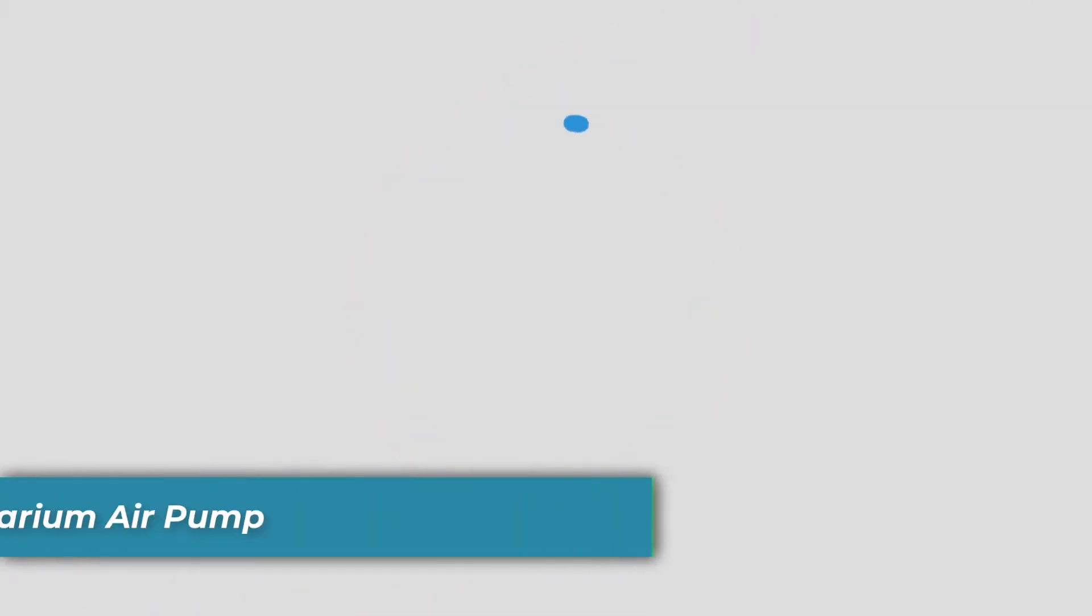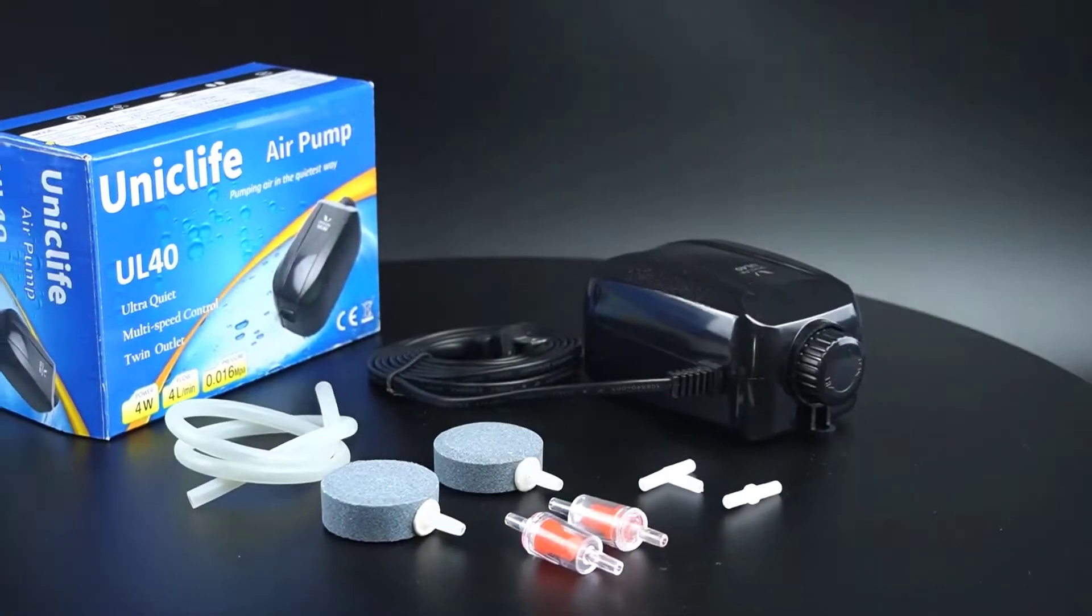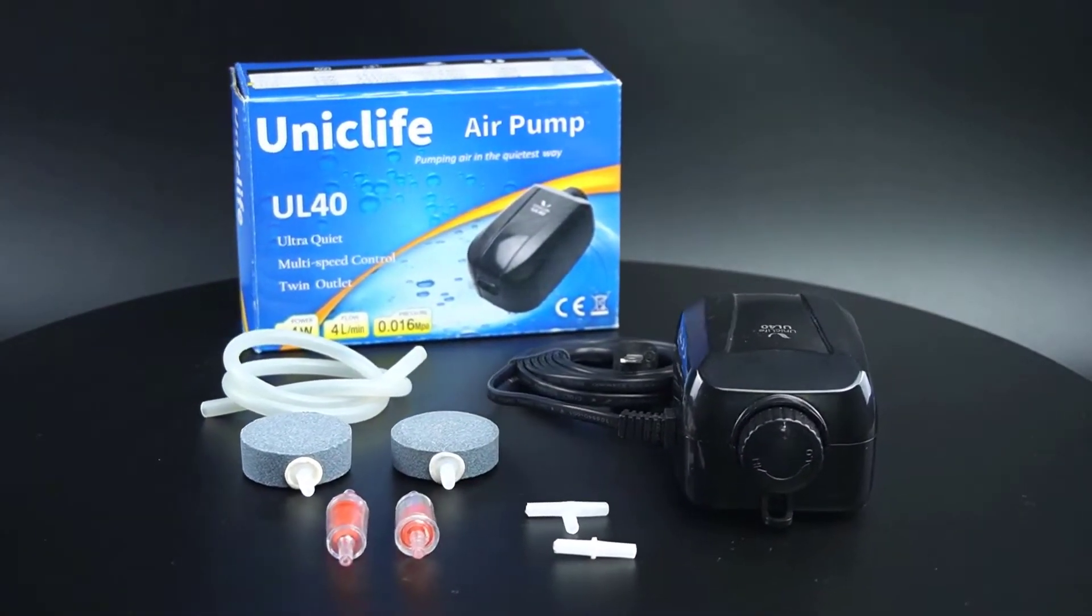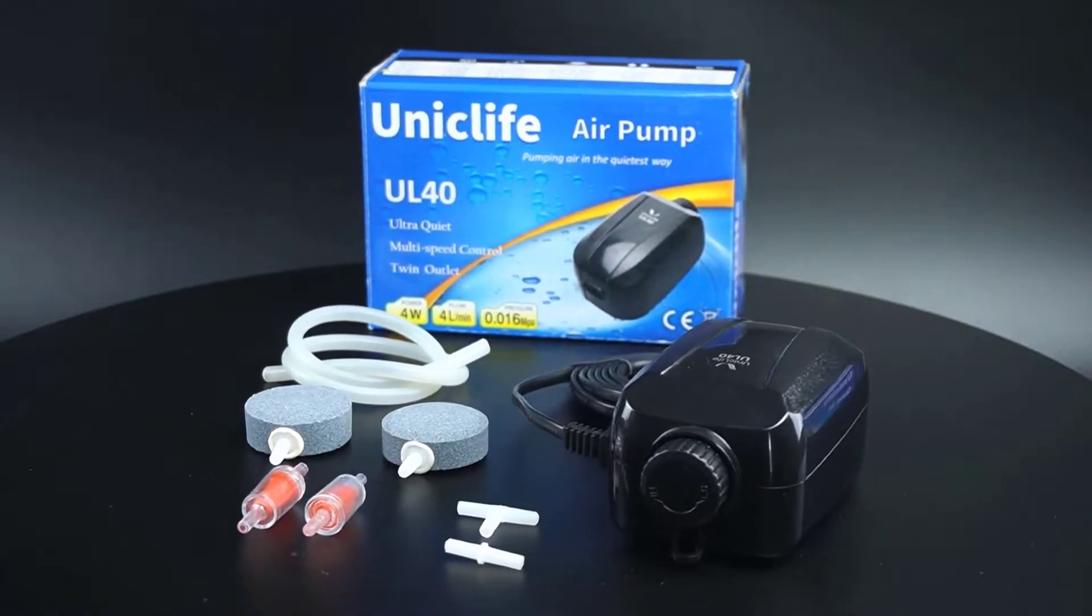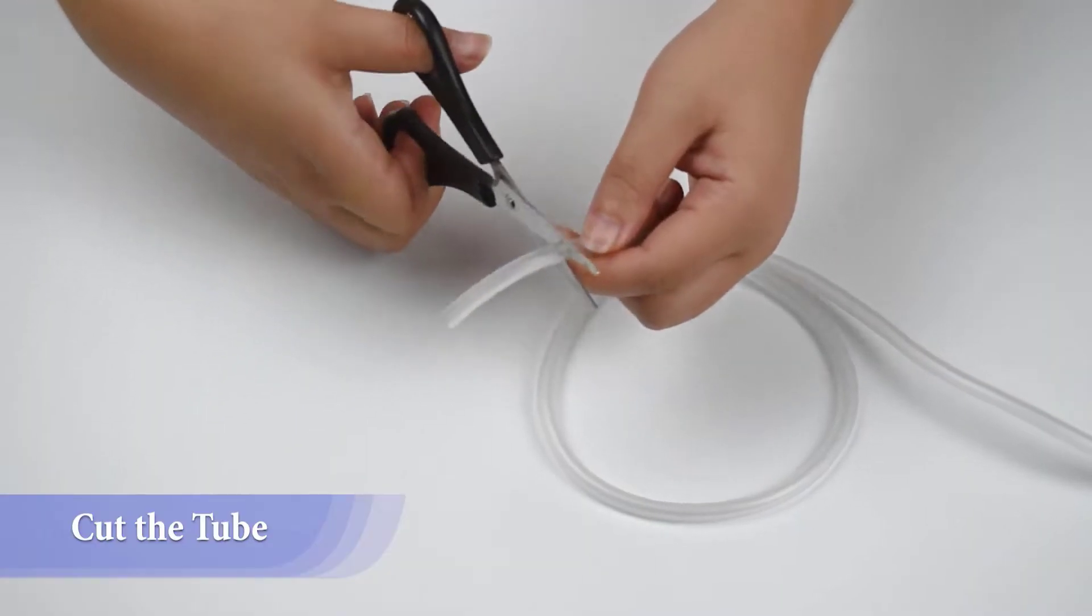Number four is Uniclife 64 GPH Aquarium Air Pump. The Uniclife Aquarium Air Pump provides an impressive 64 GPH air flow rate and is suitable for both fresh and marine aquariums between 10 to 60 gallons. This makes the pump an ideal choice for creating a healthy ecosystem in your tank.